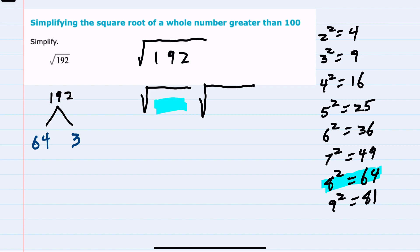And if I use that and put the 64 in one of those square roots and 3 in the other square root, then I can now evaluate this first square root, the square root of 64, we've just said as 8.